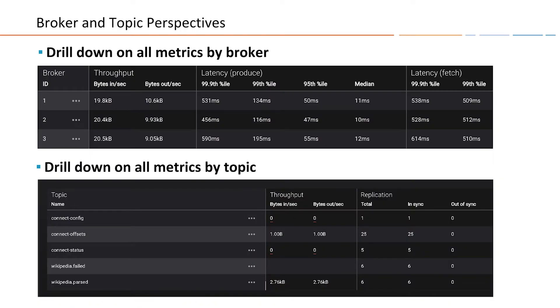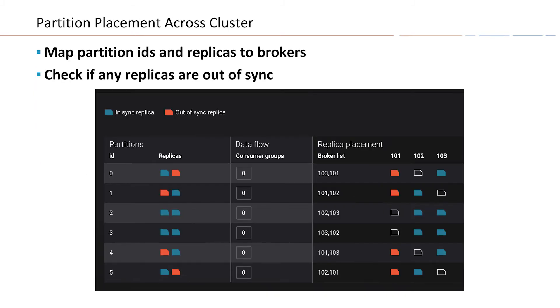To proceed when you see under-replicated partitions, drill down into the metrics of specific brokers and specific topics. Look at the broker metrics — does one broker stand out? Is the throughput unusual? Do you see any errors specific to that broker? Also look at the topics, especially if there is a subset of topics where only those have under-replicated partitions. Drilling into a topic shows a map of partitions and the placement of replicas across brokers. A single glance tells you whether the under-replicated partitions are limited to a single broker — meaning something went wrong with that broker — or spread all over the place, indicating a cluster-wide problem such as network resources or workload balance.